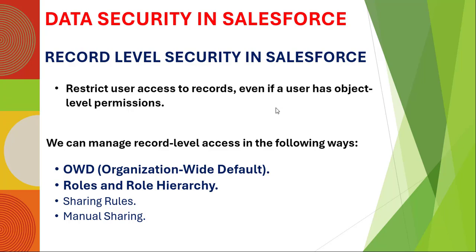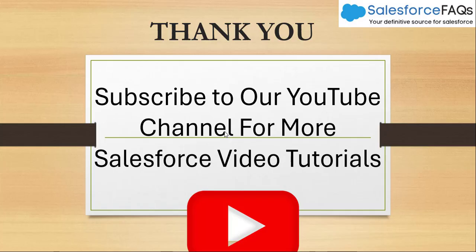In this video we have seen record level security in Salesforce — covering OWD (public, public read-write, public read-only, and private), and roles and role hierarchy. When OWD is private and we want to access other owners' records, roles and role hierarchy come into play. In upcoming videos we will see sharing rules and manual sharing. If you like the video, click the like button, subscribe to the channel, and hit the bell icon for regular updates. Thank you.